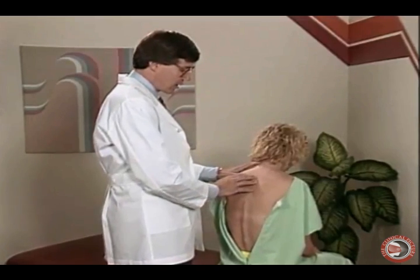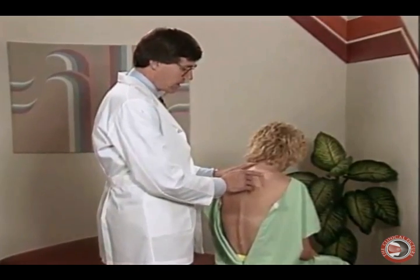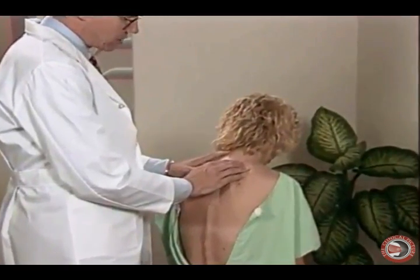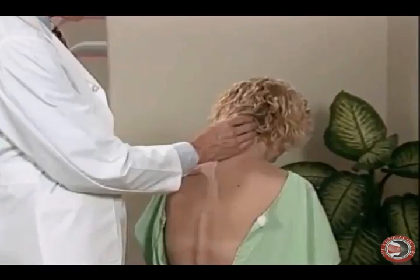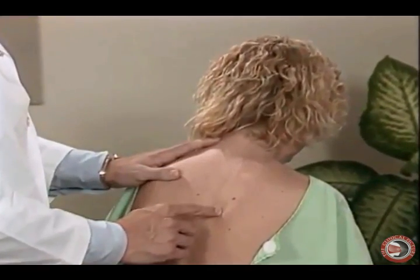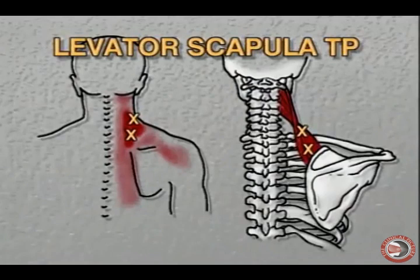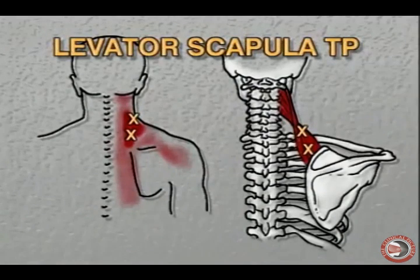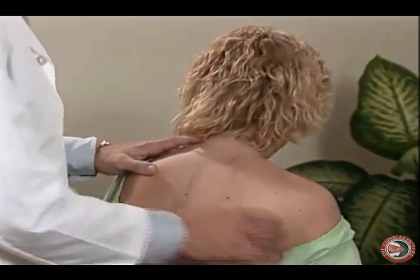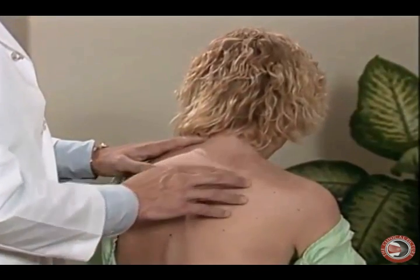The next muscle that commonly develops trigger points is the levator scapula. The levator scapula refers pain into the posterior lateral area of the neck, into the lateral shoulder, and between the shoulder blades. Often the patient will say they have tingling in this area. In myofascial pain syndromes, this tingling is referred to as formication.